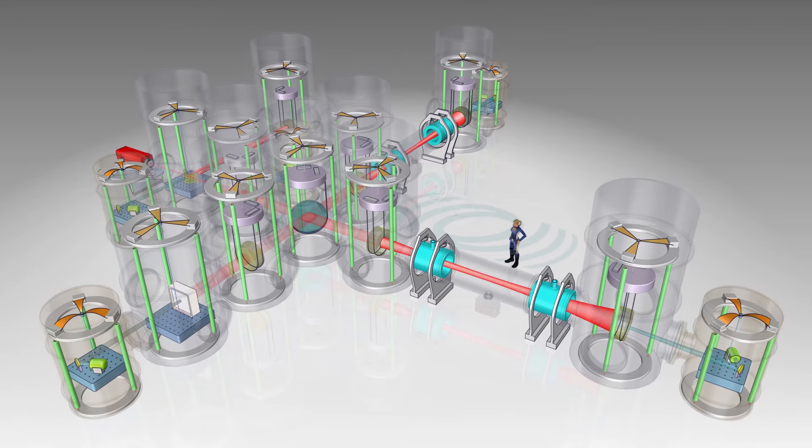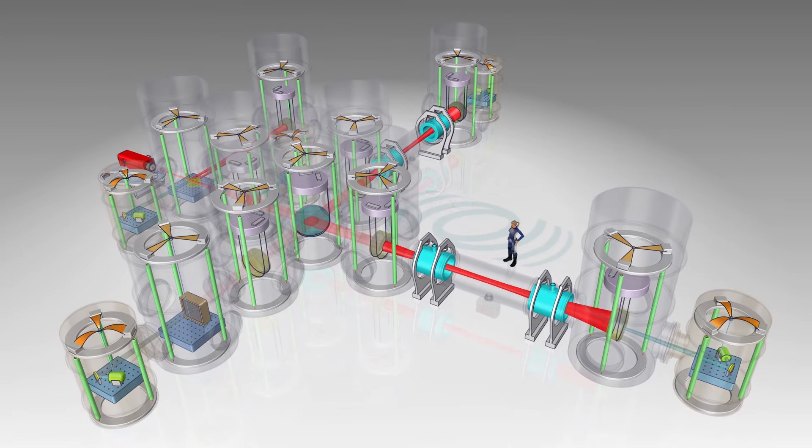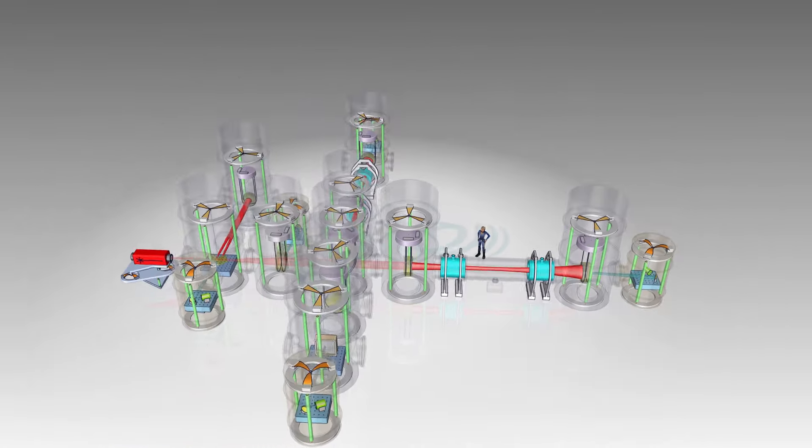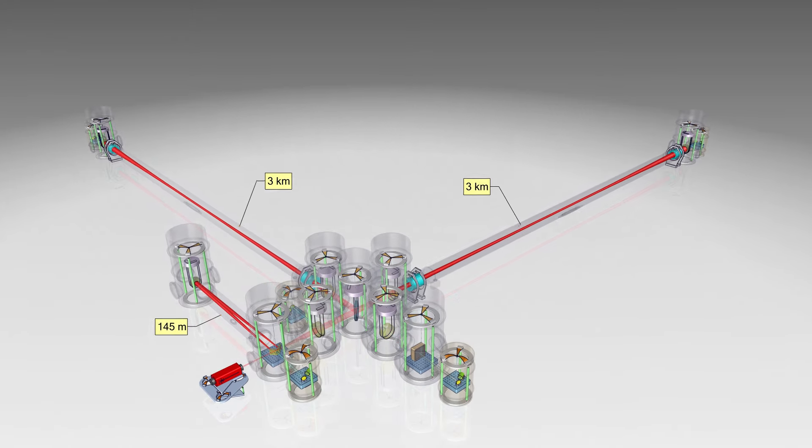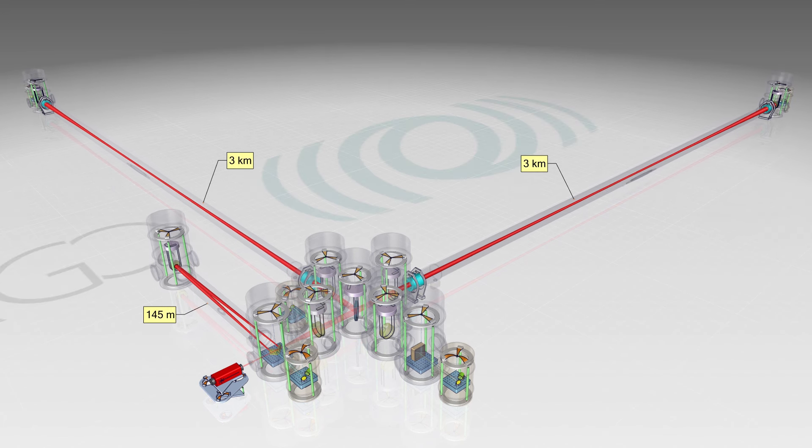We can pick up hundreds of times more signal of a gravitational wave by extending the Fabri-Perot cavities to three kilometers. This and much more is needed to realize an interferometer for detection of gravitational waves.